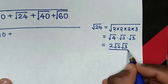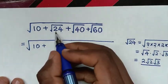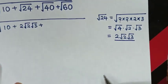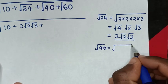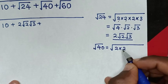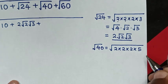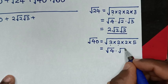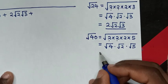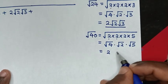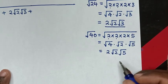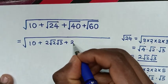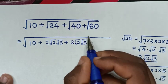Square root of 4 is 2, times square root of 2 times square root of 3. So we substitute 2√2·√3 in place of √24. Then plus square root of 40. Square root of 40 is equal to square root of 2 times 2, which is 4, times 2 which is 8, times 5 which is 40. Then it will be equal to square root of 4, which is 2, times square root of 2 times square root of 5.